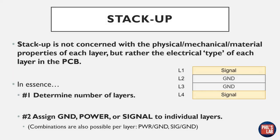Next, let's move on to the stack-up. In comparison to the build-up, the stack-up is more concerned with the electrical type of each layer in the PCB — not predominantly material thicknesses or dielectrics, but rather what layers are dedicated to what. For example, these could be signal layers, ground layers, or power layers. Signal layers contain traces, ground layers are a completely solid dedicated ground plane as a reference for signal layers, and a power plane is either a solid continuous power plane or several copper pours of various voltage levels.